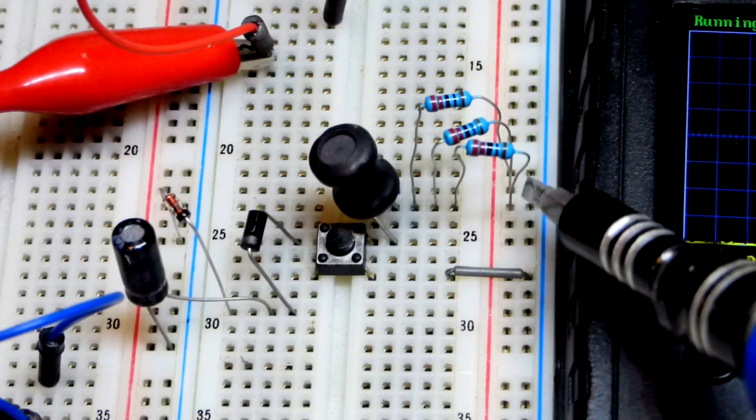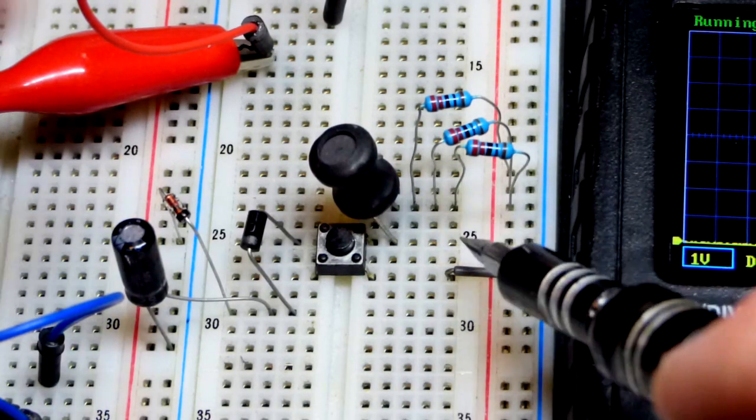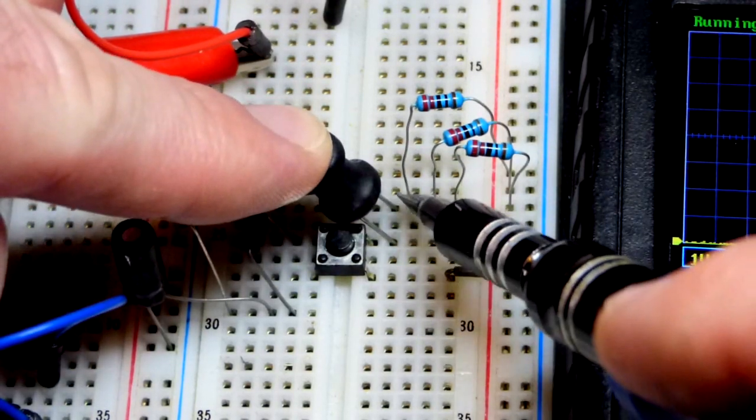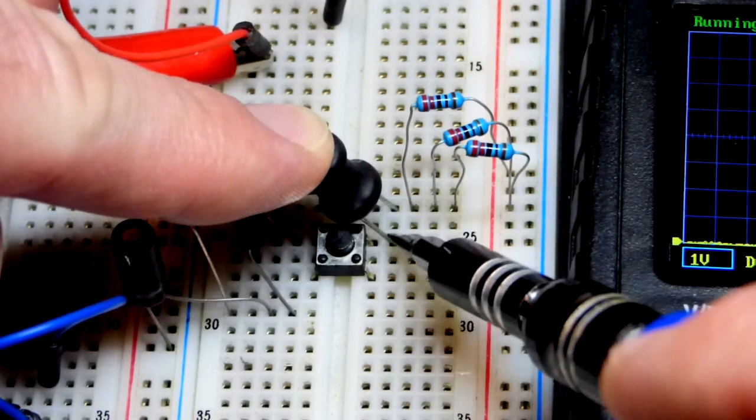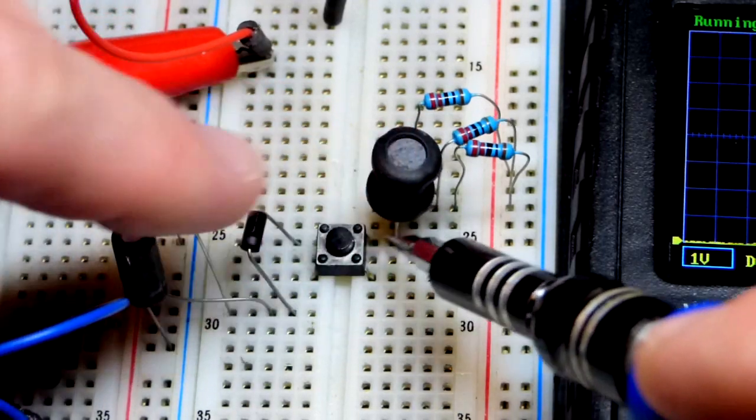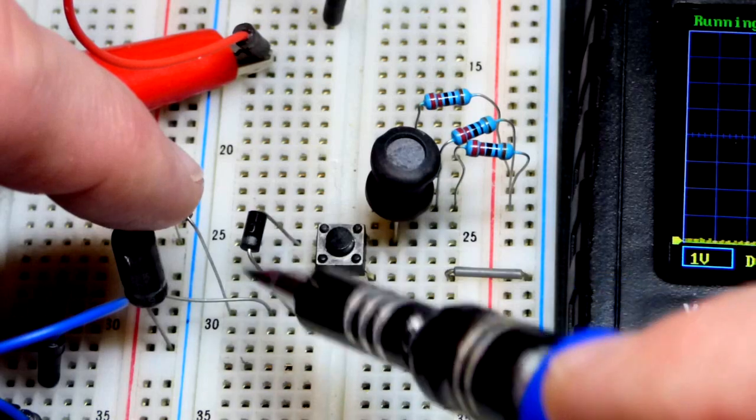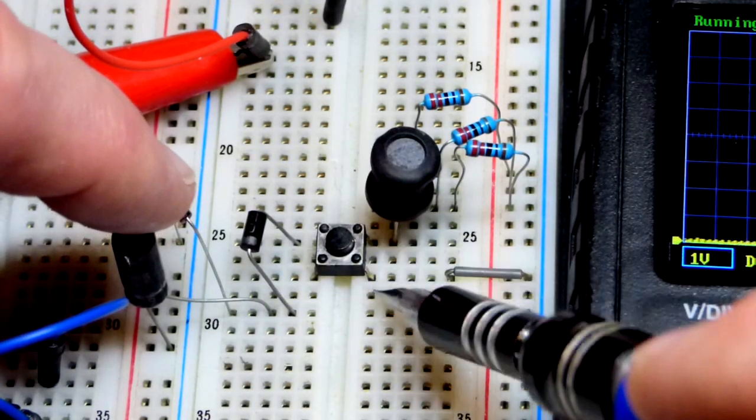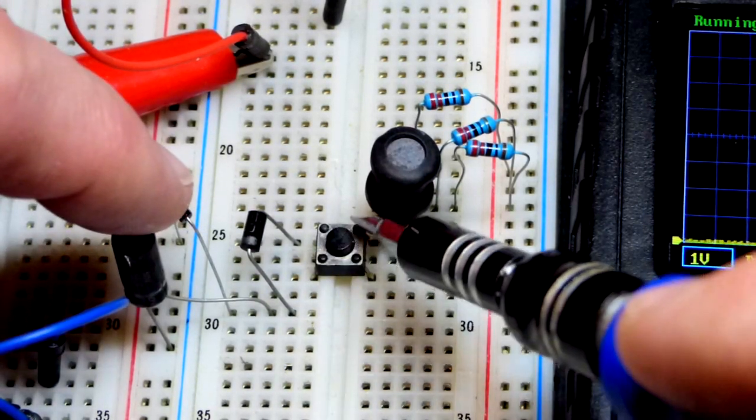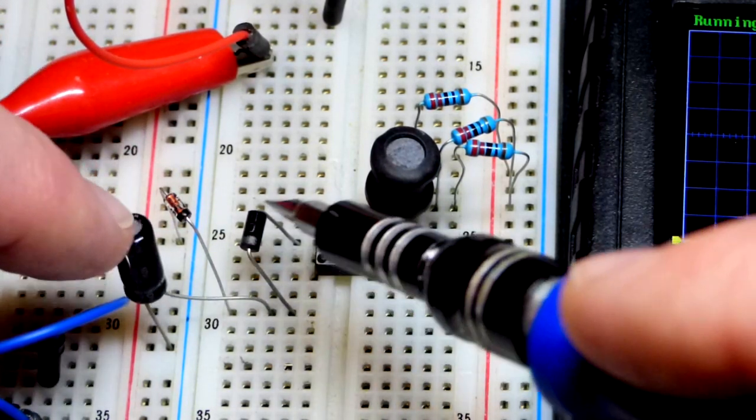Here we are on the breadboard. We have the three resistors, 220 ohms, to the positive supply. Then they come to that row there, which is where the top pin of the inductor is. The bottom pin of the inductor is to the top of the switch - 10 millihenry inductor. The top of the switch is always connected, so this is always connected to the anode of that rectifier diode.